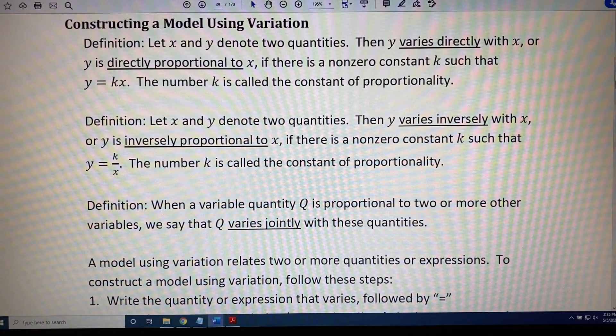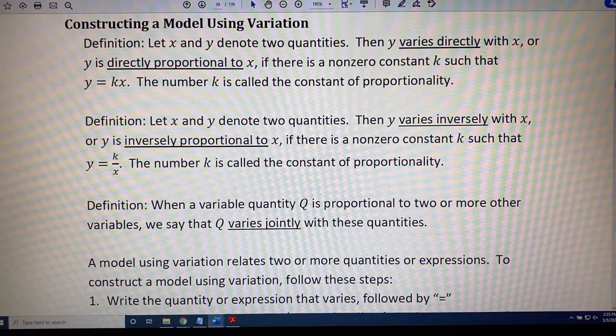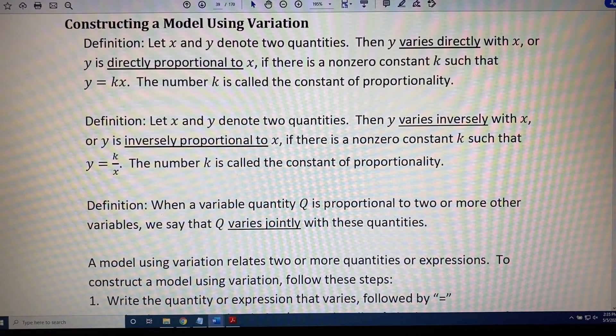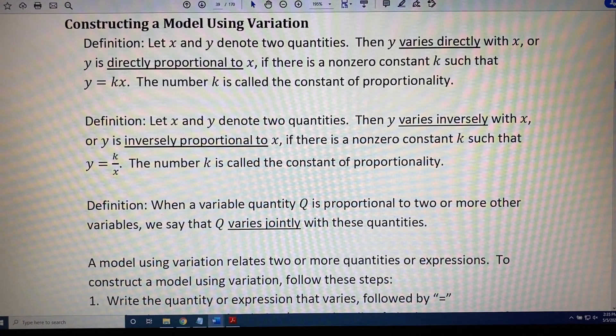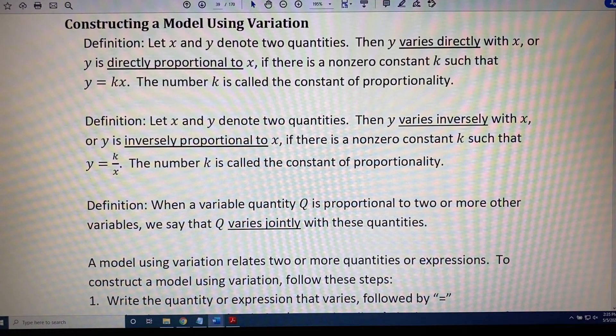All right, final definition. When a variable quantity q is proportional to two or more other variables, we say that q varies jointly with these quantities. And for the purposes of this video and this class, when we see jointly, we are to assume that that means they are varying jointly and directly, which means that these quantities will go in the numerator, as we will see in our multi-step process below.